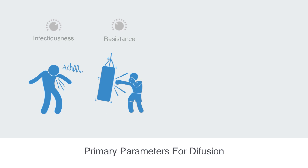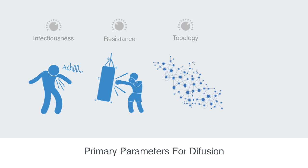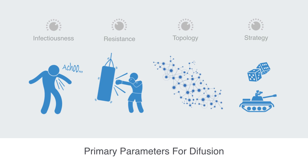Next, we need to consider the topology of the network. Obviously, this diffusion is taking place along the connections within the network, meaning different structures to the connections and different degree distributions will be another defining factor when considering diffusion. Lastly, we need to consider if this diffusion is taking place strategically or randomly, and this ties back to topology, because some network topologies are more susceptible to strategic influence than others.